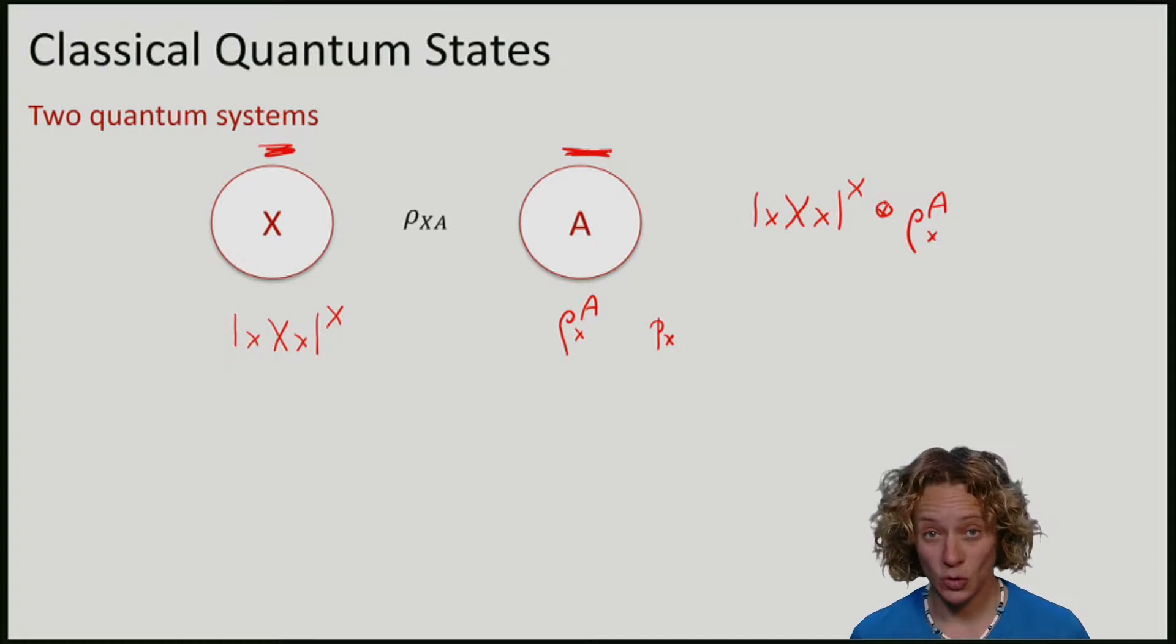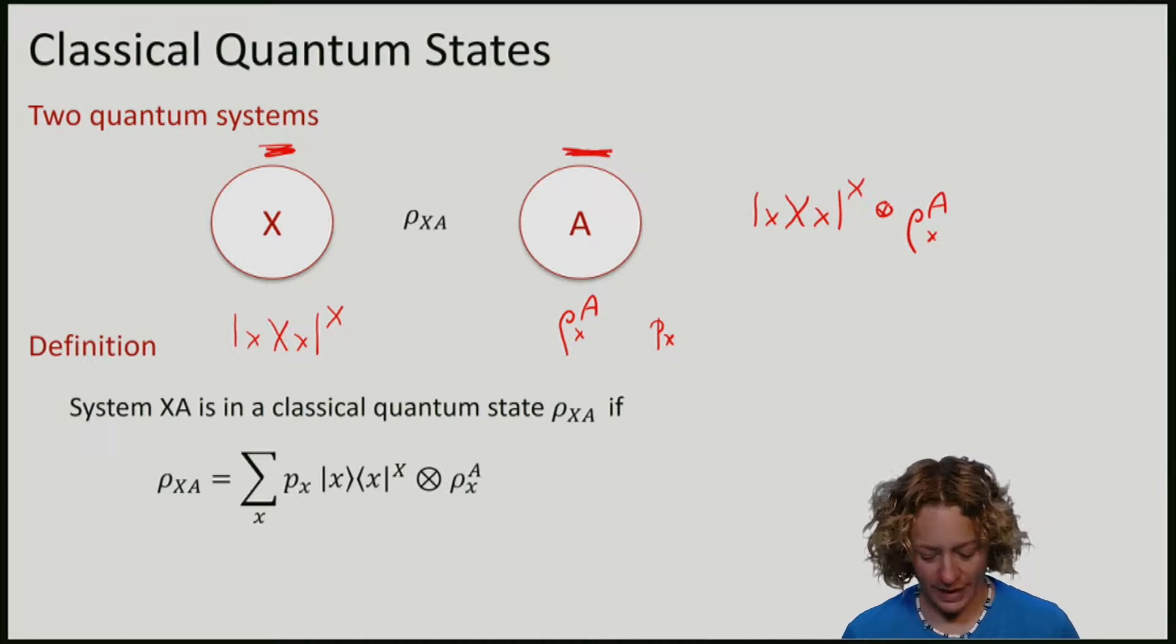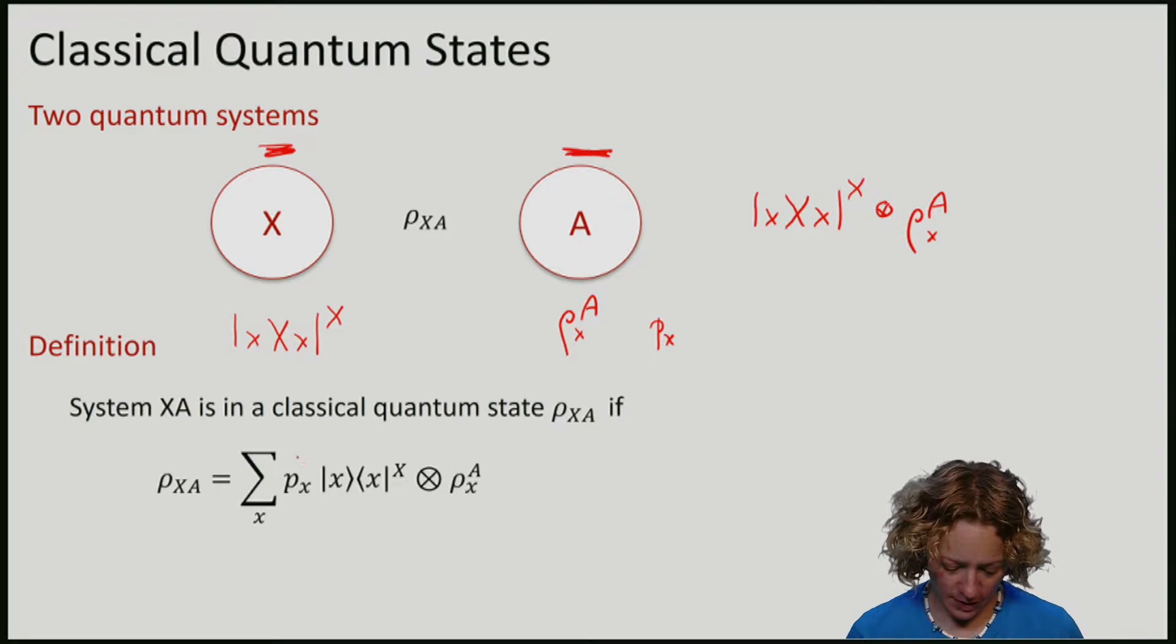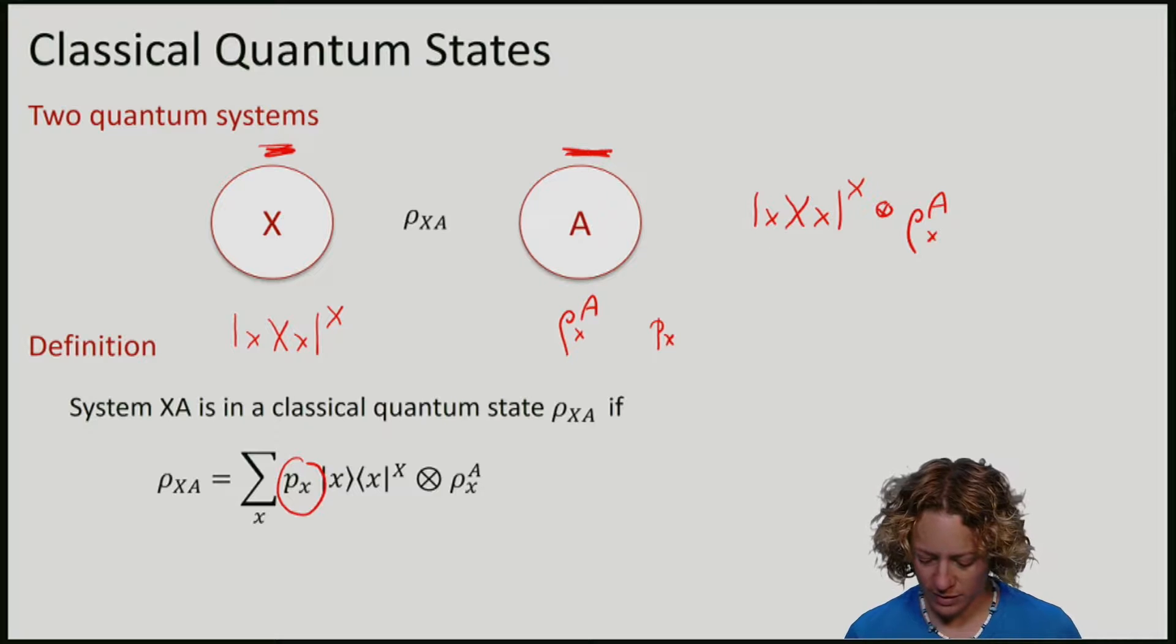This means that the joint state between rho X and A can be written as a density matrix PX, namely as a sum over the probabilities PX with which we generate that state.